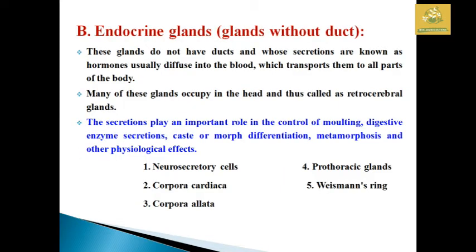After finishing the exocrine glands, we now move to the endocrine glands. These glands have an absence of duct and are known as the hormonal secretion glands. They are usually diffused into the blood and transferred to all parts of the body. Most of the glands are located in the head and the retrocerebral glands. Their secretion plays an important role in controlling the molting process, digestion, exo-enzyme secretion, metamorphism, and other physiological effects in insects. The endocrine glands are present in neurosecretory cells, corpus cardiacum, corpus allatum, prothoracic gland, and the Weismann ring.